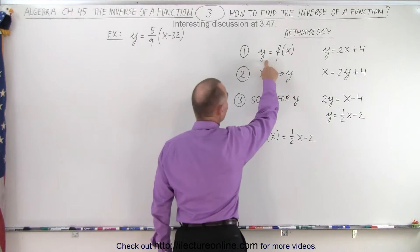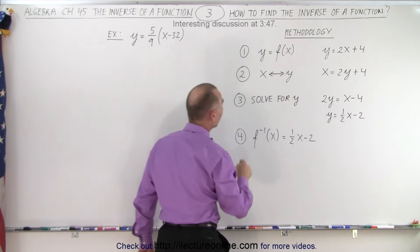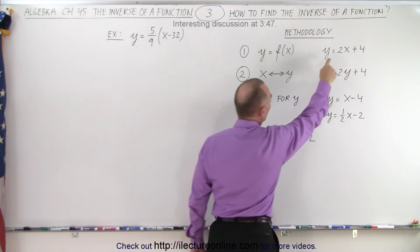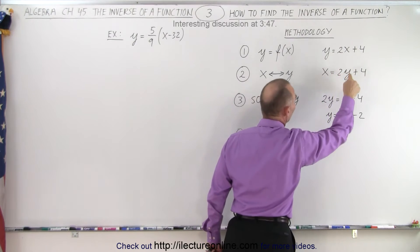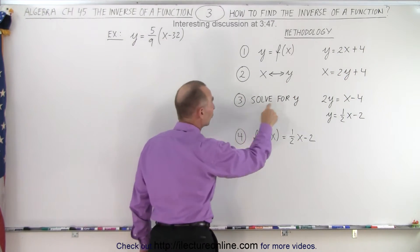We start with the original function and let's say that the original function is y equals 2x plus 4. The first thing you do is you interchange all the x's and the y's. You make every y an x and every x a y. That's all you do. And then the next step is to solve for y.